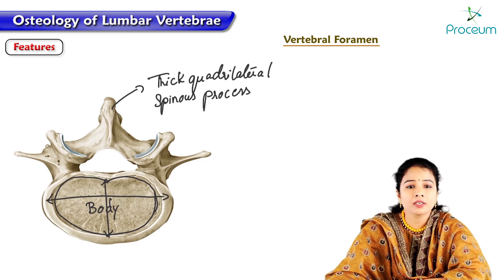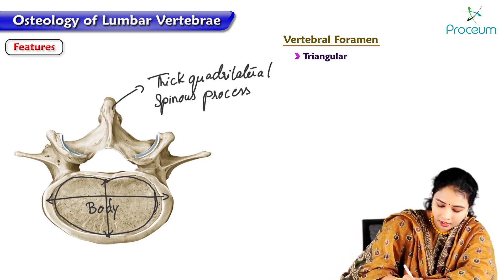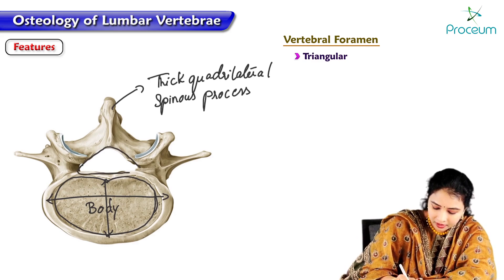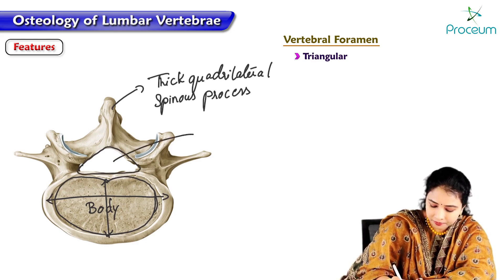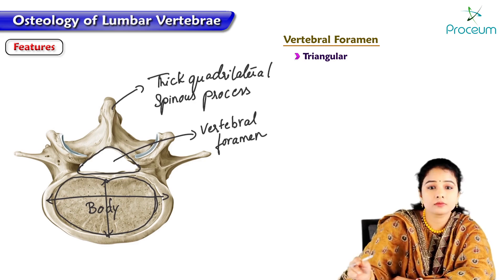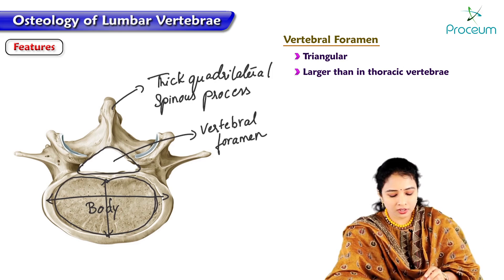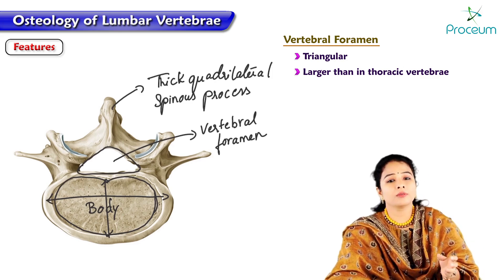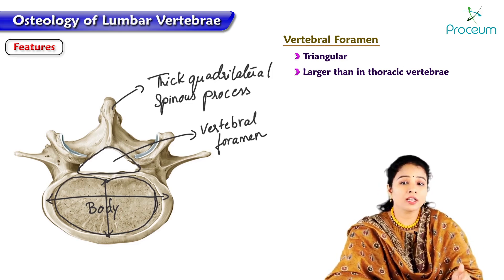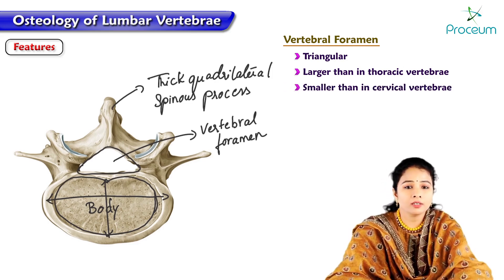Regarding the vertebral foramen, it is triangular in shape. The vertebral canal is larger than in the thoracic vertebrae but smaller than in the cervical vertebrae.